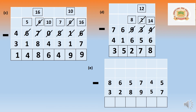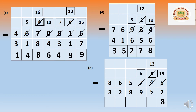In the ones place: 5 cannot minus 7. Borrow from 4 — it gives 10, making it 15, and 4 becomes 3. Fifteen minus 7 is 8. In the tens place: 3 cannot minus 5. Borrow from 7 — it becomes 6, and 3 becomes 13. Thirteen minus 5 is 8.